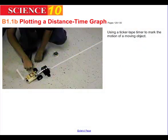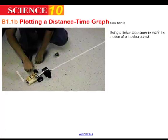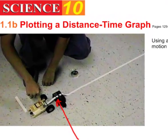We also like to plot the motion of objects using a distance-time graph, and to obtain that data we use a little gizmo that you see here called a ticker timer.